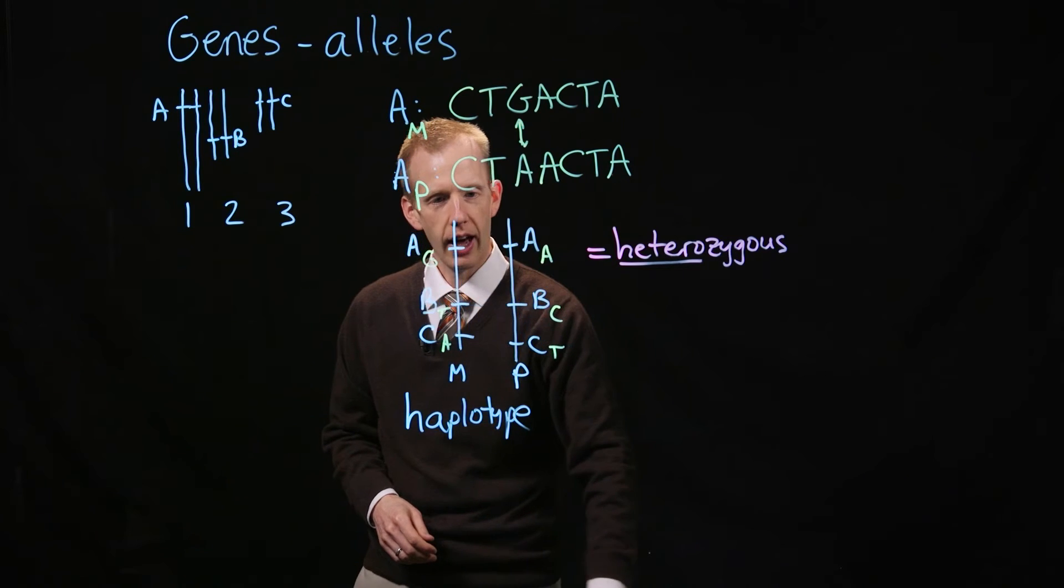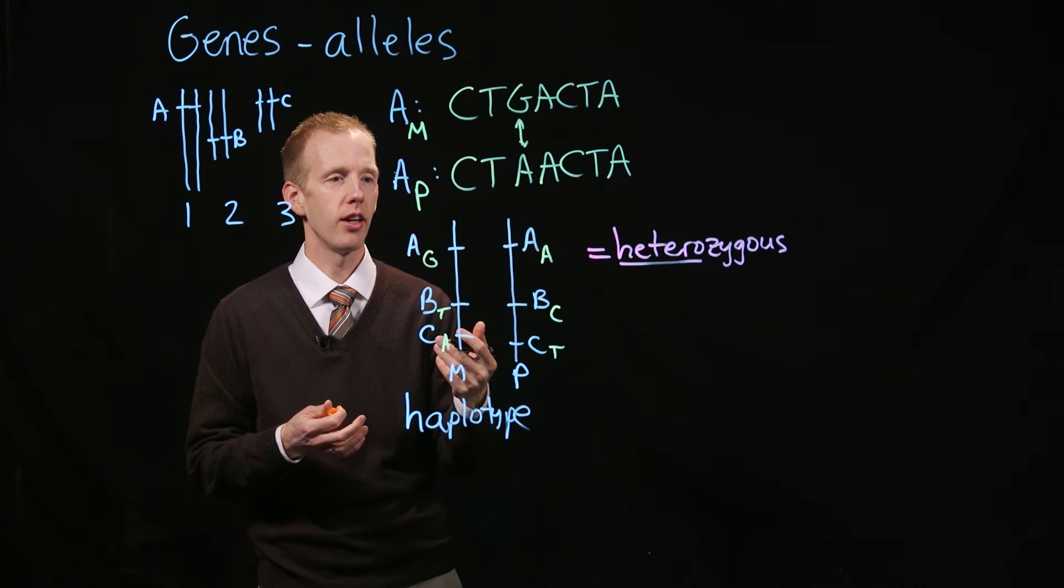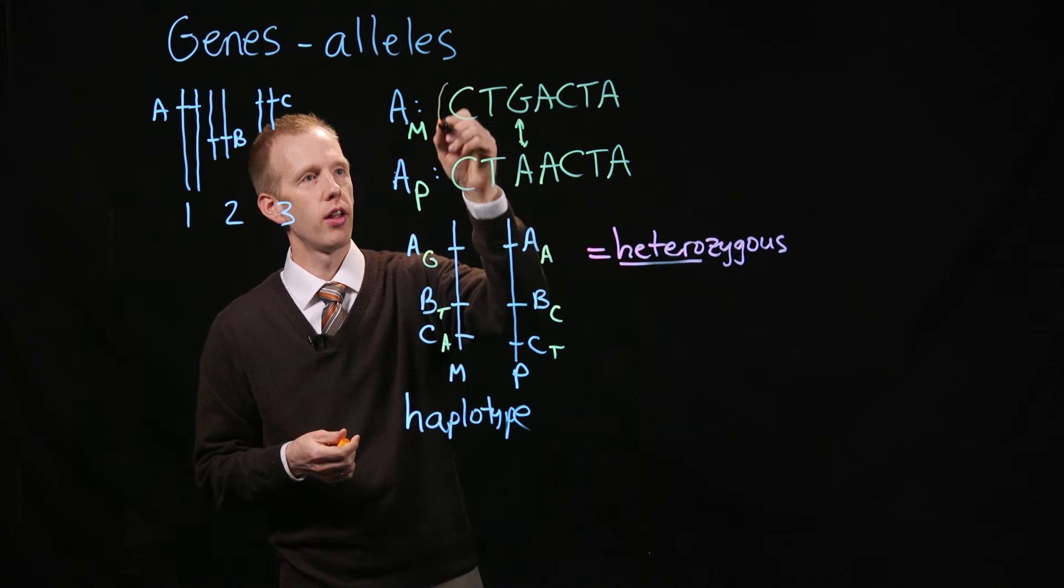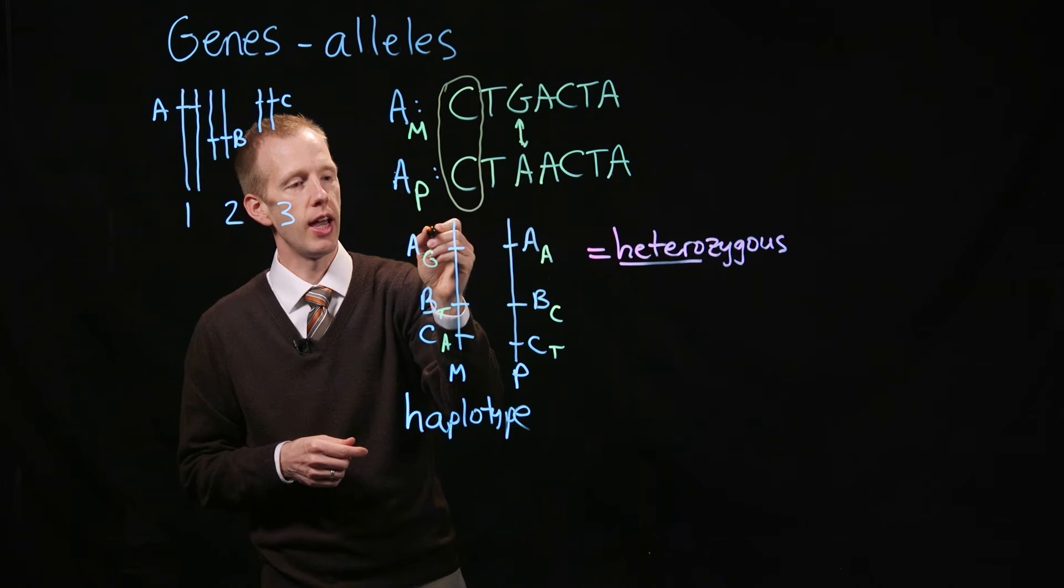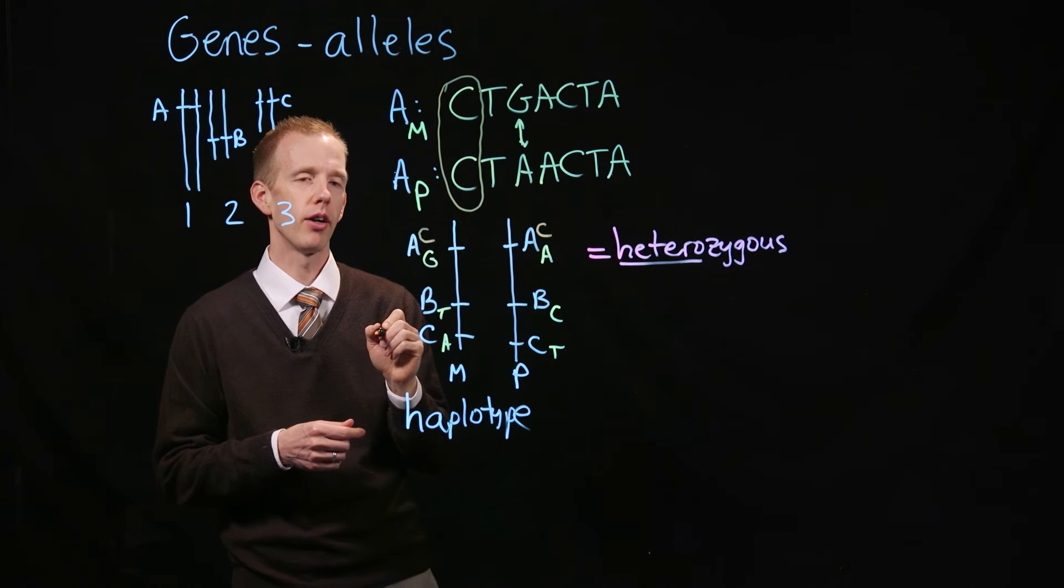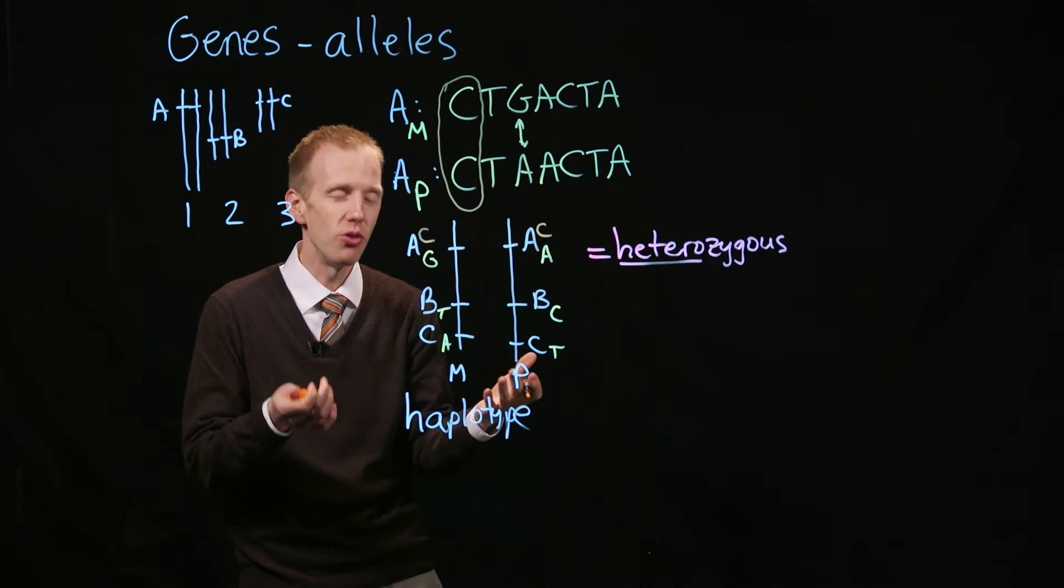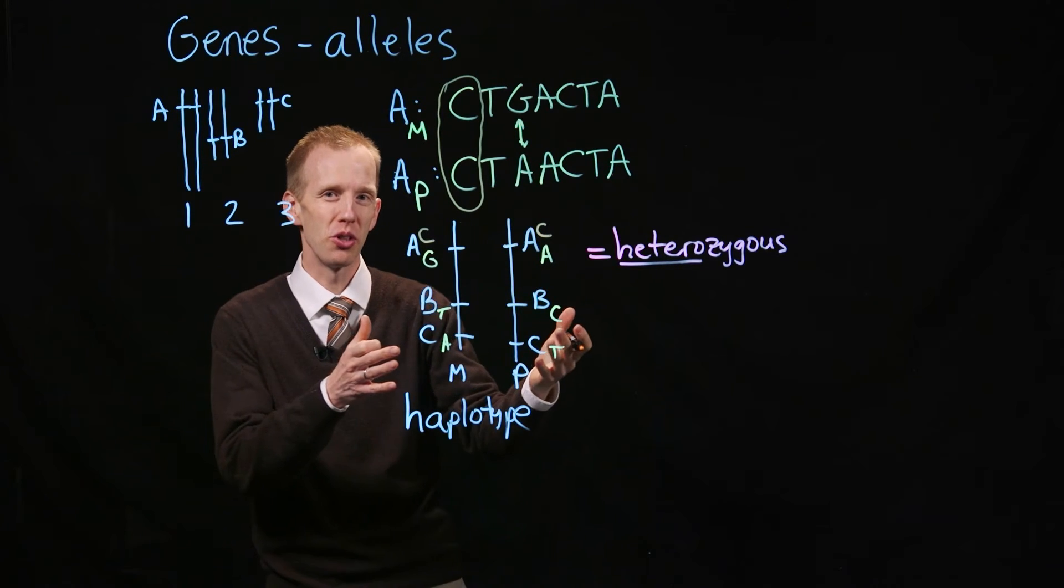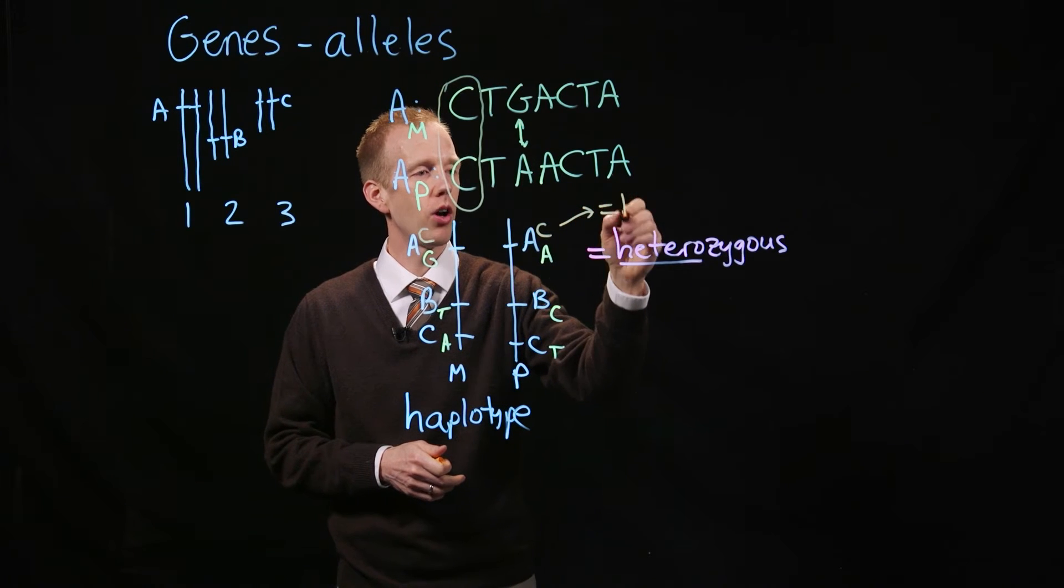We could also look at the other type of genotype, which is homozygosity. For example, this nucleotide here, which is also in gene A, there's a C at a different part of gene A. Those are the same between the two different chromosomes. I can't use them, they're not useful to distinguish the two chromosomes. These are homozygous.